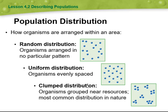Then we have clump distribution, which is organisms grouped near resources. This is the most common distribution found in nature.